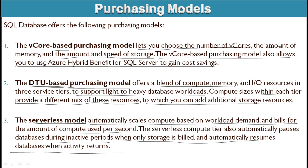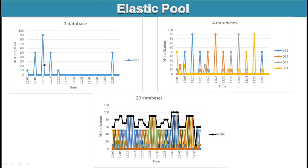Now let's understand the Elastic Pool with a diagram. In the first diagram, we have a single database with the maximum DTU utilization set to 100. Sometimes it reaches 90, sometimes only 50, and sometimes it is not used at all. We are totally wasting the DTU utilization because we are not using it during those idle periods.